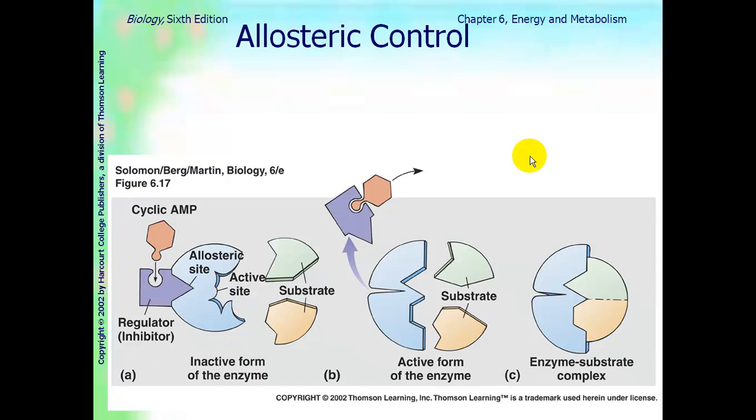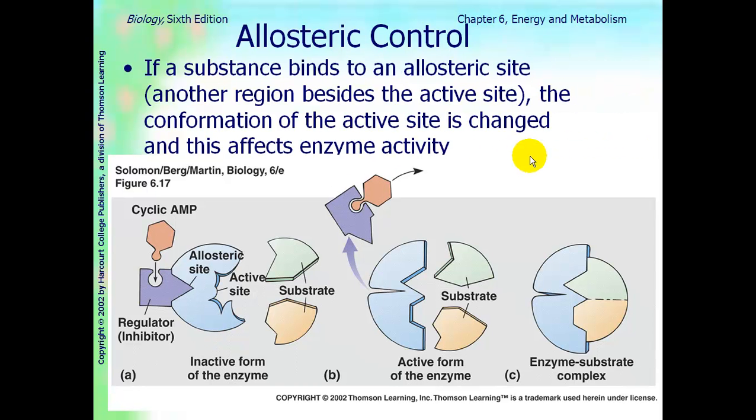Another concept that's called allosteric control. If a substance binds to an allosteric site, and then we just learned about allosteric sites. Allosteric sites are sites that are not the active site. So over here, that's an allosteric site. Here's your active site. When that happens, an inhibitor binds to the allosteric site, the conformation of the active site is changed, and I just went over this, and that affects the enzyme activity. And so that enzyme is inactive because that inhibitor is bound to the allosteric site.